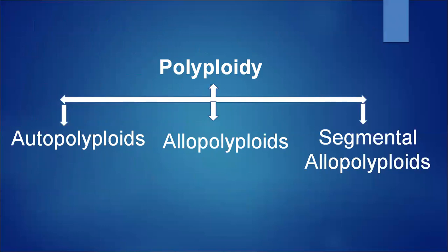Now we will see polyploidy in detail. Polyploidy is when a plant contains more than two sets — multiple sets of basic chromosomes are present. Examples are 3x, 4x, 5x, 9x and so on. It is of three types: autopolyploidy, allopolyploidy, and segmental allopolyploidy. Polyploidy arises due to two processes: irregular mitosis causing spindle disturbances and doubling of the chromosome set, or irregularities in meiosis resulting in formation of unreduced gametes.